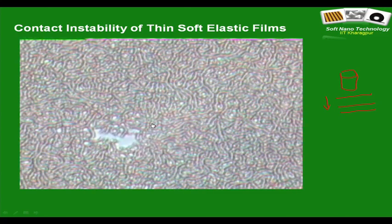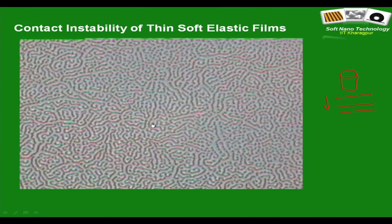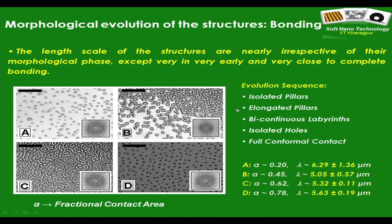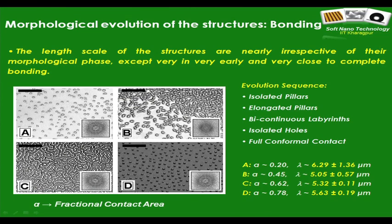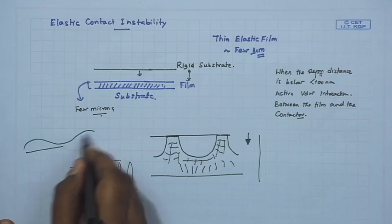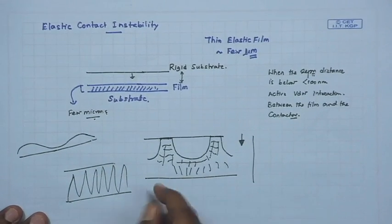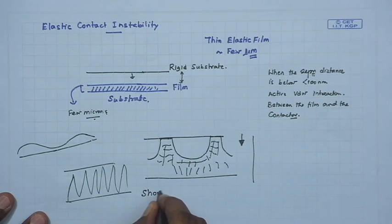As the approach continues, you see complete formation of bicontinuous labyrinths, and even beyond this stage further approach leads to formation of isolated holes. As some parts of the film go and touch the contactor, other parts pull back — that is why you see closely packed patterns, because as some areas go into contact other areas pull down, related to the elastic nature of the film. This leads to undulations on the surface, which is in clear contrast to dewetting where wavelengths were much higher. Therefore, this form of instability is called the short wave instability.